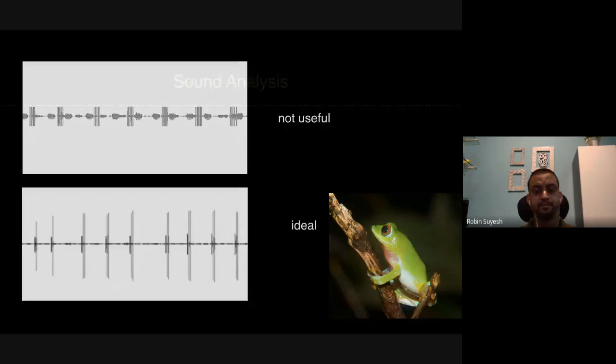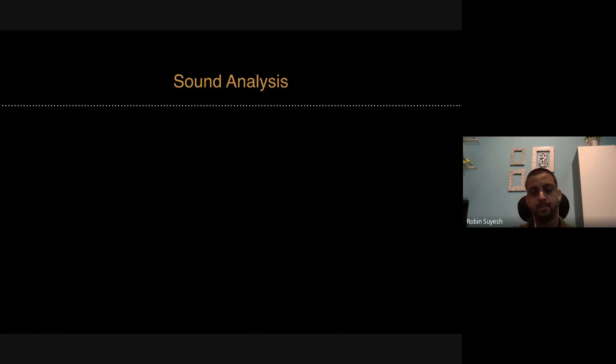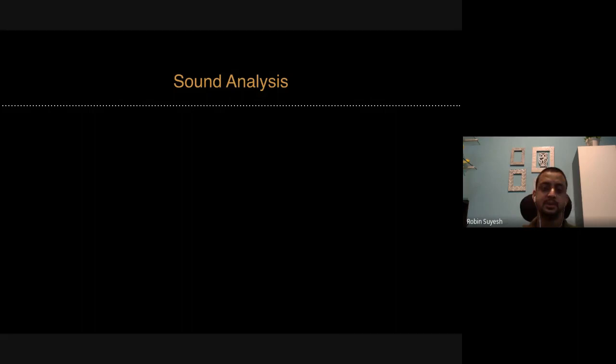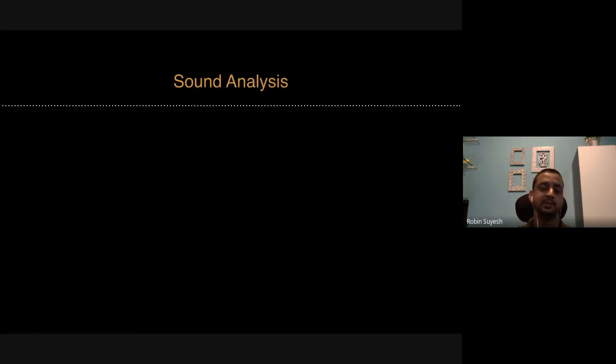Another important aspect is analyzing sounds. Before I give ideas about sound analysis, in frogs we study two kinds of call properties — temporal and spectral. Temporal properties are based on time, and spectral property relates to frequency. We study a lot of temporal properties, but these are not standard for all species of frogs. When analyzing a particular species, you need to look at what temporal properties you can study from that particular recording, which will vary from species to species.